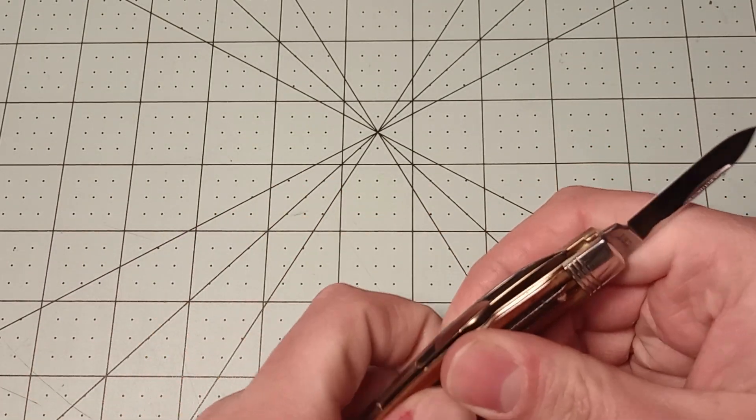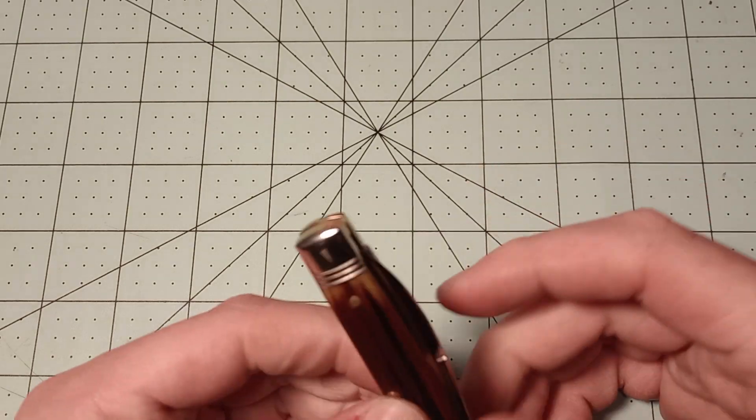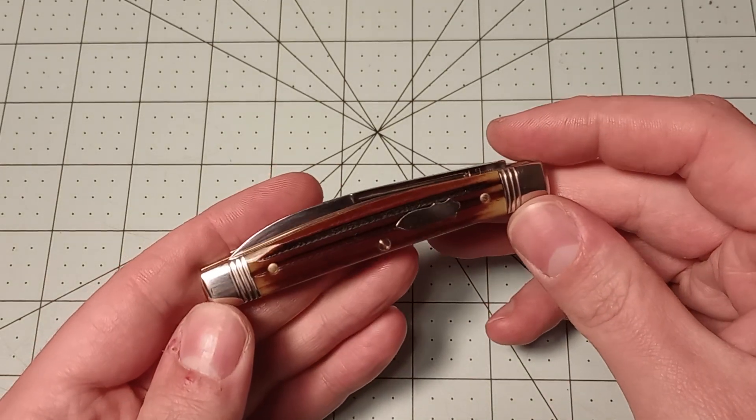That way, if your main blade is dull, you do have a backup. This knife didn't have any blade play or anything. Which is nice.